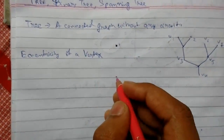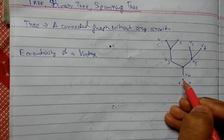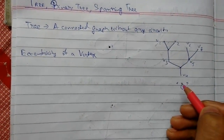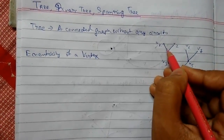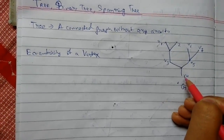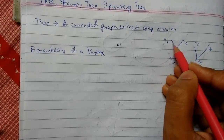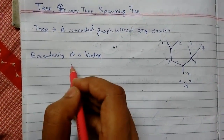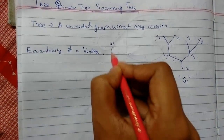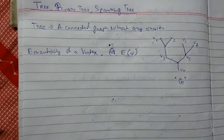Now we will see what the eccentricity of a vertex in a tree is. In any graph or tree, the maximum distance from a vertex to another vertex is called the eccentricity of that vertex. For example, from v1 to v7 is one, two, three, four, five edges — this is the maximum. Eccentricity, denoted e(v), is the distance from vertex v to the farthest vertex in the graph.